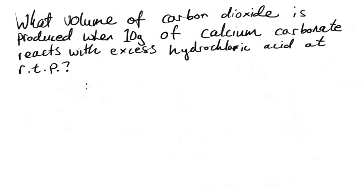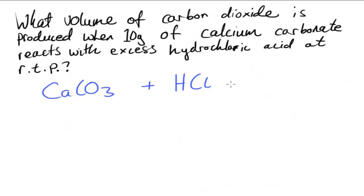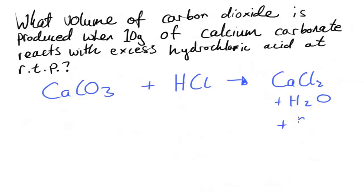The first thing I need to do is work out a balanced equation. Calcium carbonate is reacting with excess hydrochloric acid, so CaCO₃ is reacting with HCl, and that's producing a metal salt — in this case CaCl₂ — along with H₂O and CO₂.